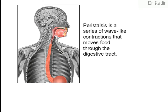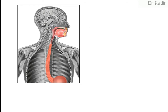Peristalsis is a series of wave-like muscle contractions that move food through the digestive tract. It starts in the esophagus, where strong wave-like motions of the smooth muscle move balls of swallowed food to the stomach.